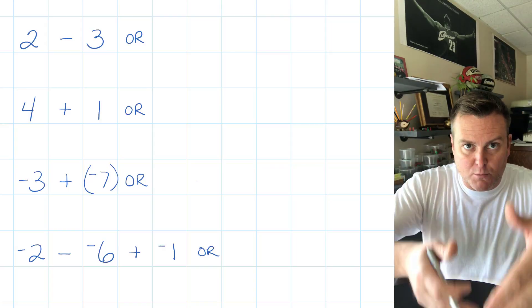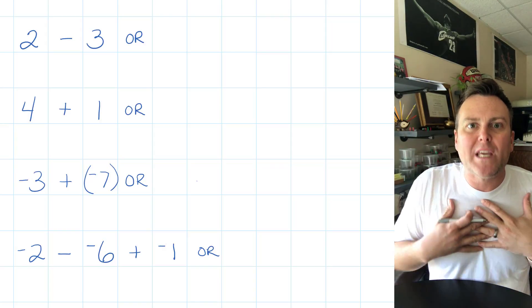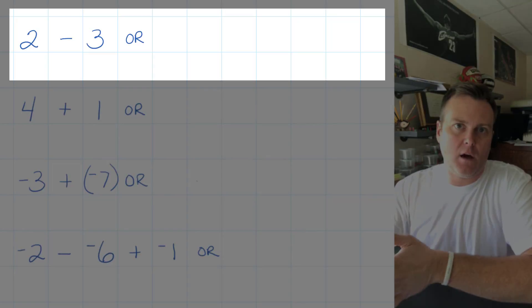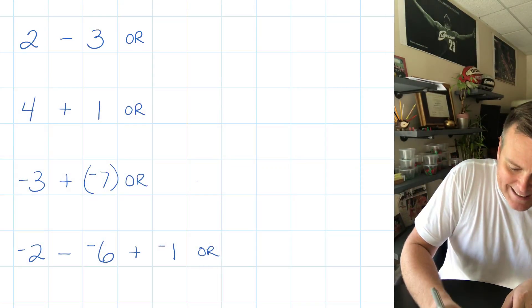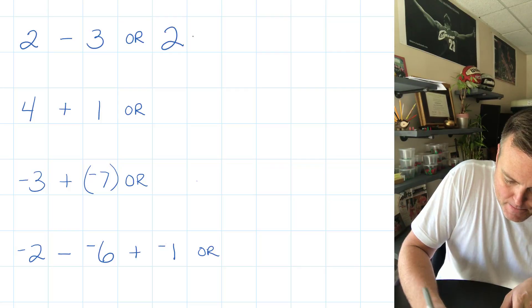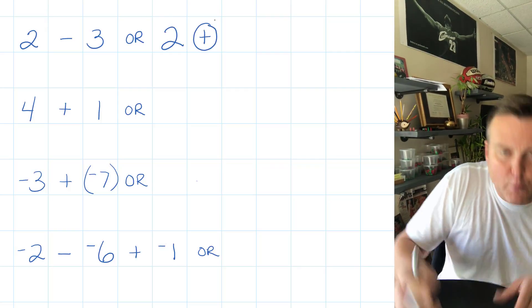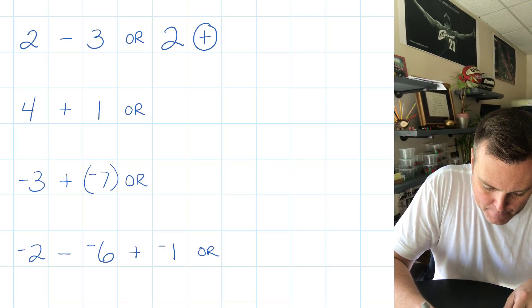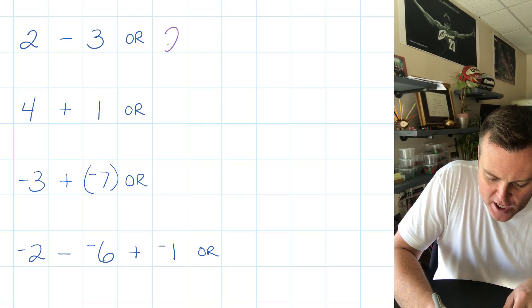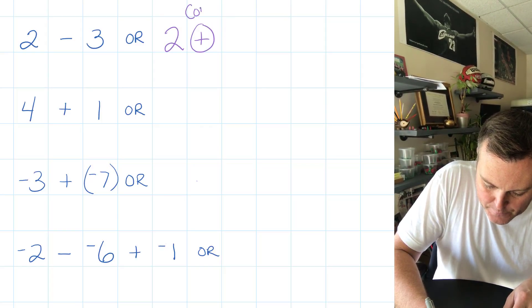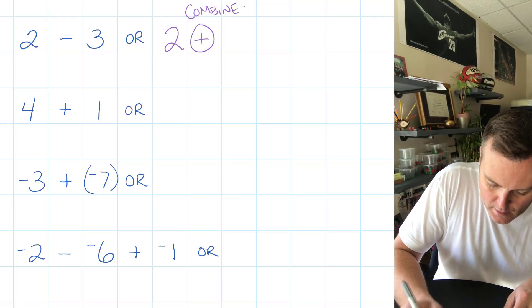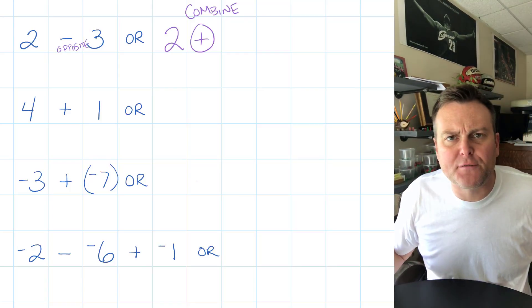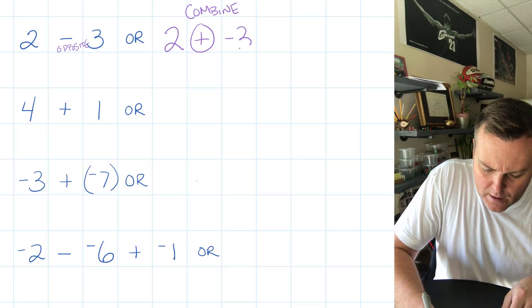We want to start getting in the idea of, okay, that's a three, subtraction sign. Instead of subtraction, we teach opposite. We've got two and we want to combine that with the opposite of three. Let's talk about what that looks like. Two, and we want to change it so that we're combining it together. We've got two – doesn't change – and we're combining with the opposite of three.